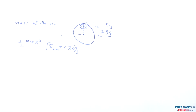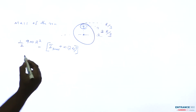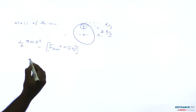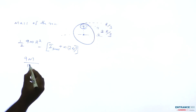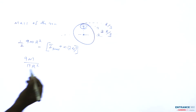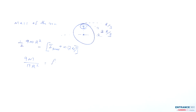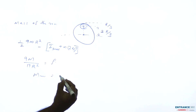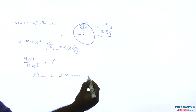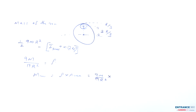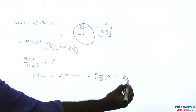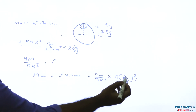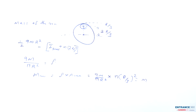To calculate the mass of the removed part, assume the density is uniform over the disk. Density equals mass over area, so total mass 9m divided by area πr² equals density ρ. Mass of removed part equals density times area of removed part, which is (9m / πr²) times π(r/3)². The 9m cancels out, giving mass of removed part equal to m.